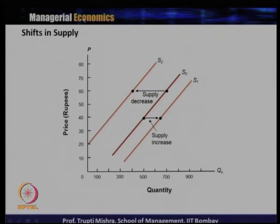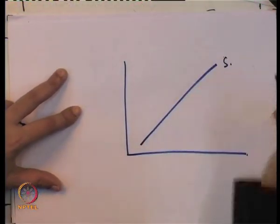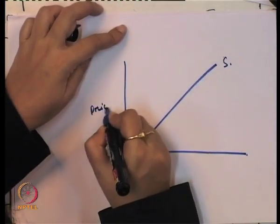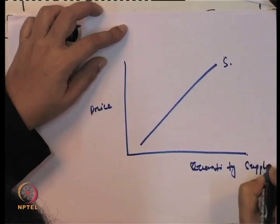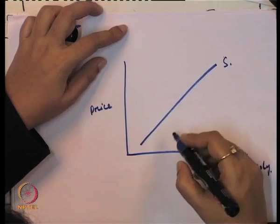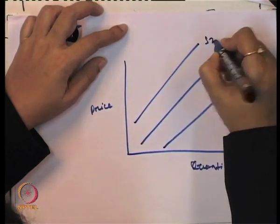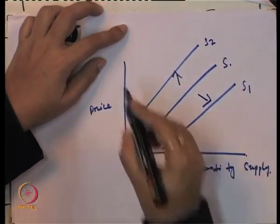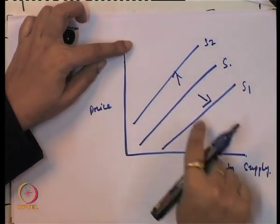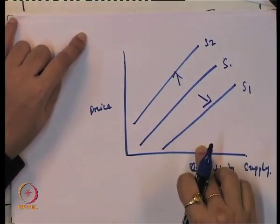What will happen if there is a change in the price? Looking at our supply curve, the y-axis has price and the x-axis has quantity supplied. As we have seen, if there is an increase in supply the supply curve shifts to the right, and if there is a decrease in supply the supply curve shifts to the left. These two scenarios exist when there is a change in supply due to non-price determinants.